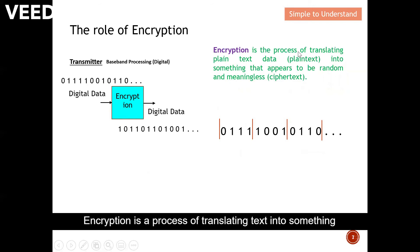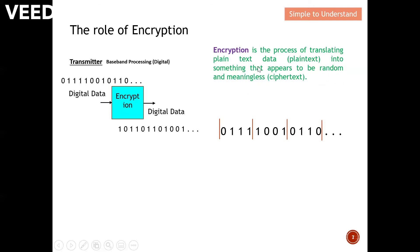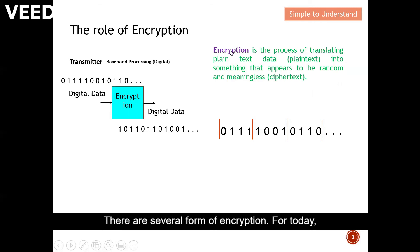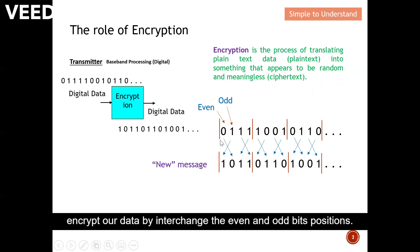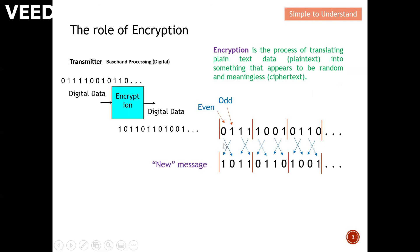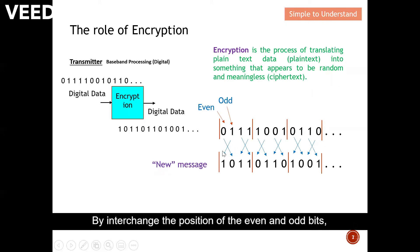Encryption is a process of translating text into something that appears to be random or meaningless. There are several forms of encryption. And for today, I'm going to introduce you to one of the easiest encryption. For example, this is the even bit and this is the odd bit. We can easily encrypt our data by interchanging the even and odd bit partition. By interchanging the partition of the even and odd bit, another new set of message actually appeared.